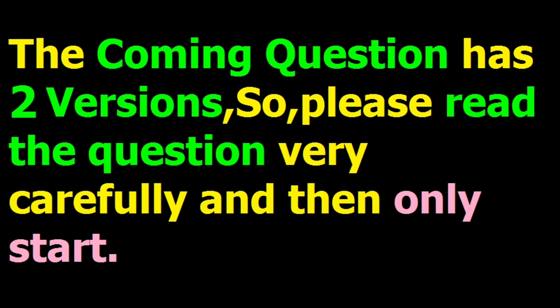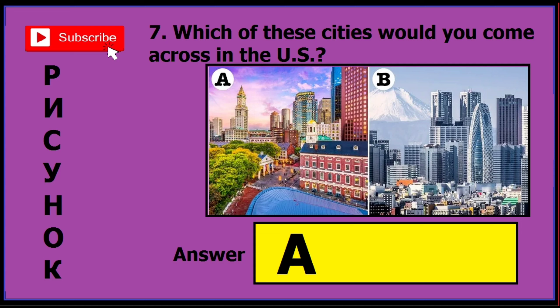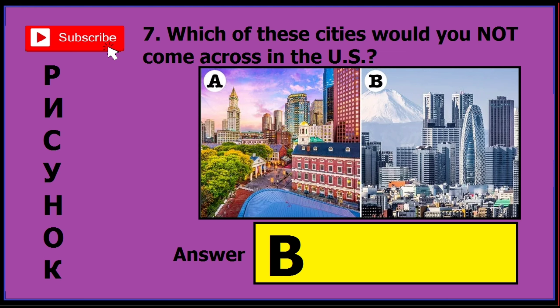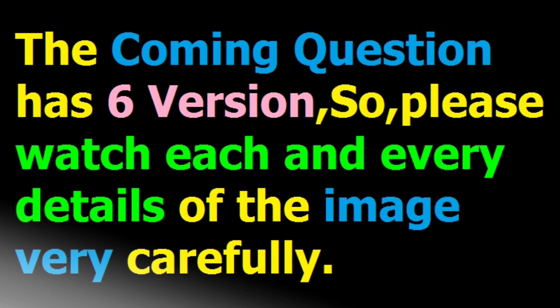This coming question has only two versions, so please read the question very carefully. In version one, the question asks 'which of these cities will you come across in the US?' and the correct answer is A. In version two, it is the opposite — it asks 'which of these cities would you not come across in the US?' — and the correct answer is B.